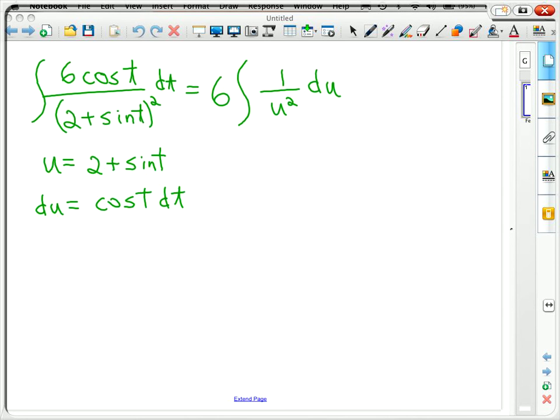And that's a pretty easy integral to do because 1 over U squared is U to the negative 2 power. So I really just get 6 times U to the negative 1 divided by negative 1. But that's not a really nice way to write the problem or rather the solution.